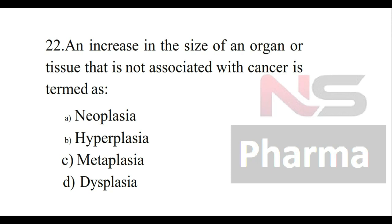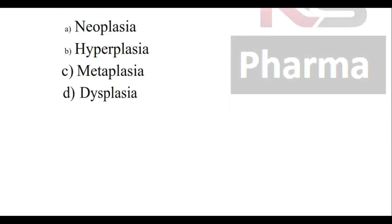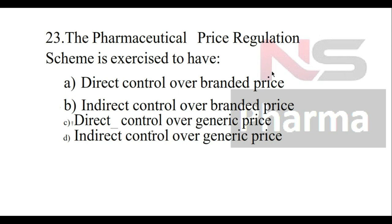Question number twenty-two: An increase in the size of an organ or tissue that is not associated with cancer is termed as — Option A: Neoplasia, Option B: Hyperplasia, Option C: Metaplasia, Option D: Dysplasia. The answer is hyperplasia.